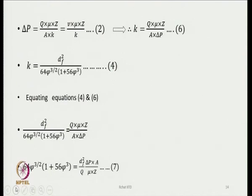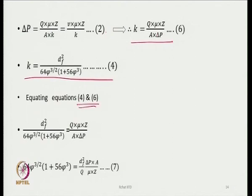Making use of these equations — this is one basic equation from which we write the value of K, and this is another equation for K permeability. From there, equating equations 4 and 6, we write that the permeability equals something which can be measured by experiments. Obviously, the left-hand side can also be measured — we can measure the fiber diameter and find out the solid volume fraction.